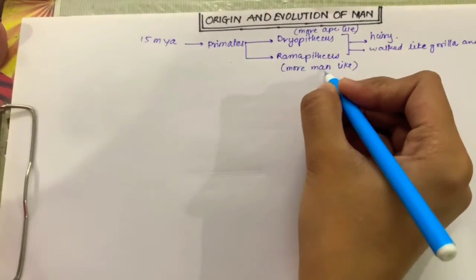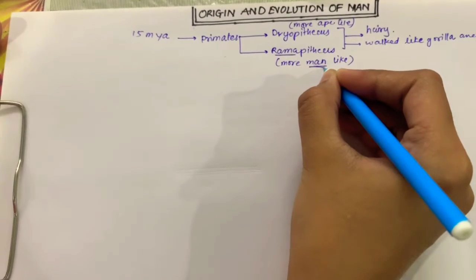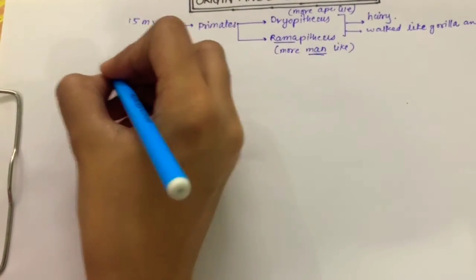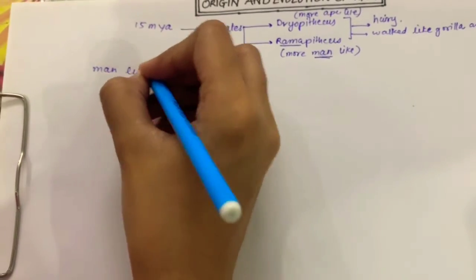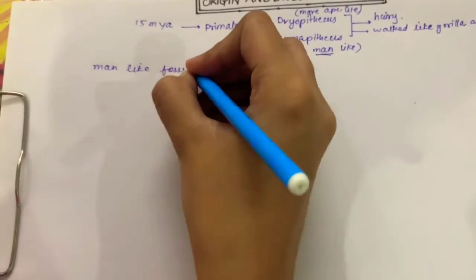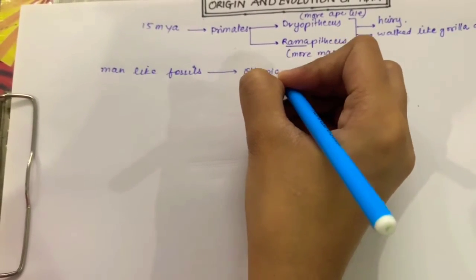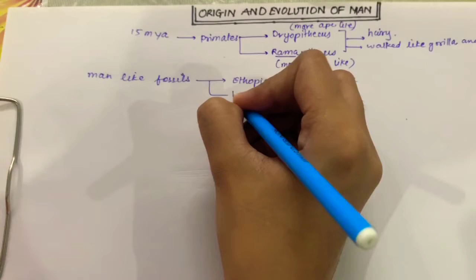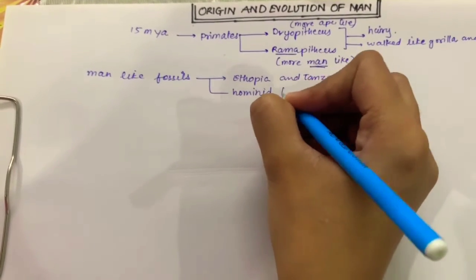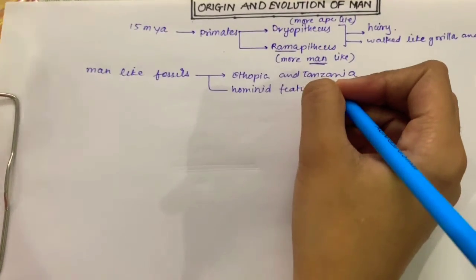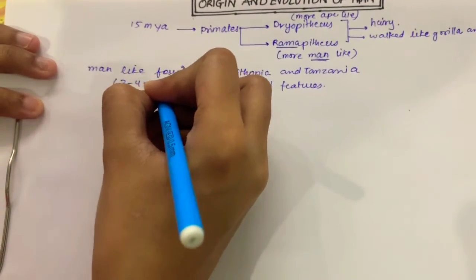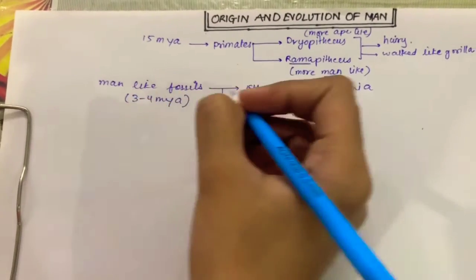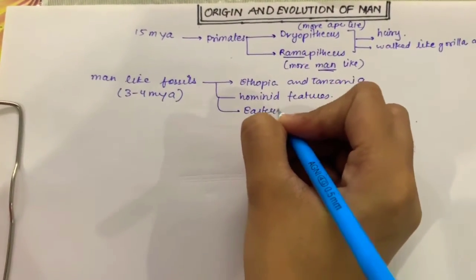Man-like fossils were found in Ethiopia and Tanzania. They had hominid features. About 3 to 4 million years ago, these man-like primates walked in Eastern Africa.